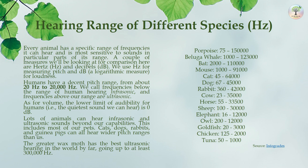Hearing range of different species. Every animal has a specific range of frequencies it can hear and is most sensitive to sounds in particular parts of its range. We use hertz for measuring pitch and decibels for loudness. Humans have a decent pitch range, from about 20 Hz to 20,000 Hz. Frequencies below the range of human hearing are called infrasonic, and above our range are ultrasonic. The lower limit of audibility for humans is 0 decibels. Many animals can hear infrasonic and ultrasonic sounds beyond human capabilities.